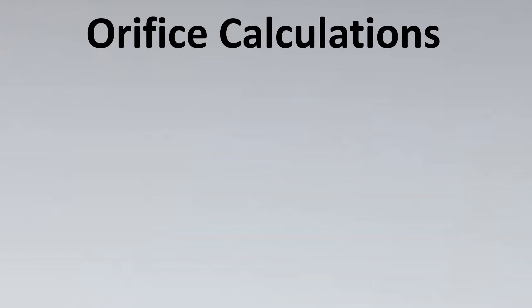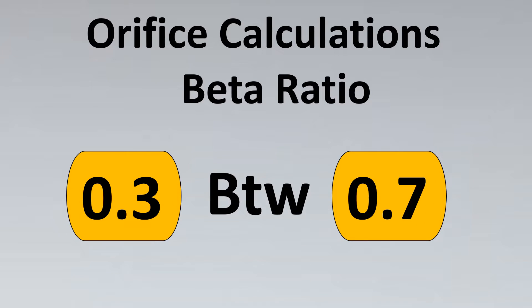While performing orifice calculations, one of the most important terms is beta ratio. You would have heard about this term and especially that you need to keep it between a certain value like 0.3 to 0.7.